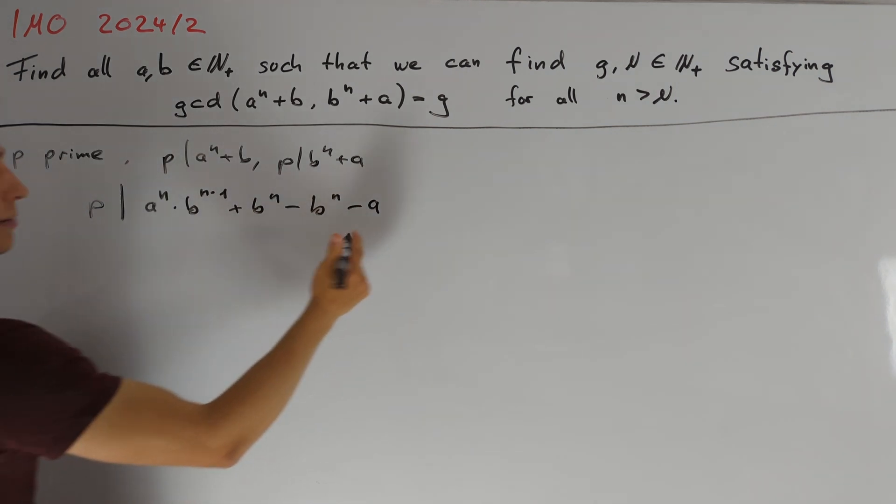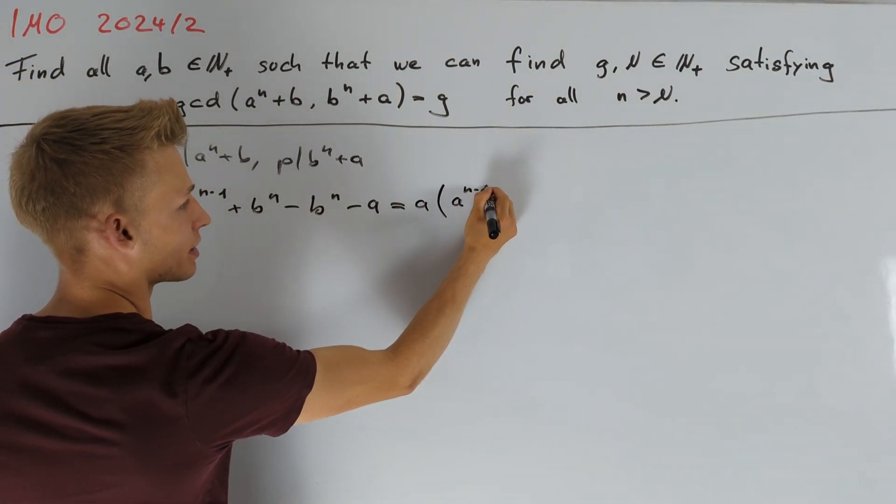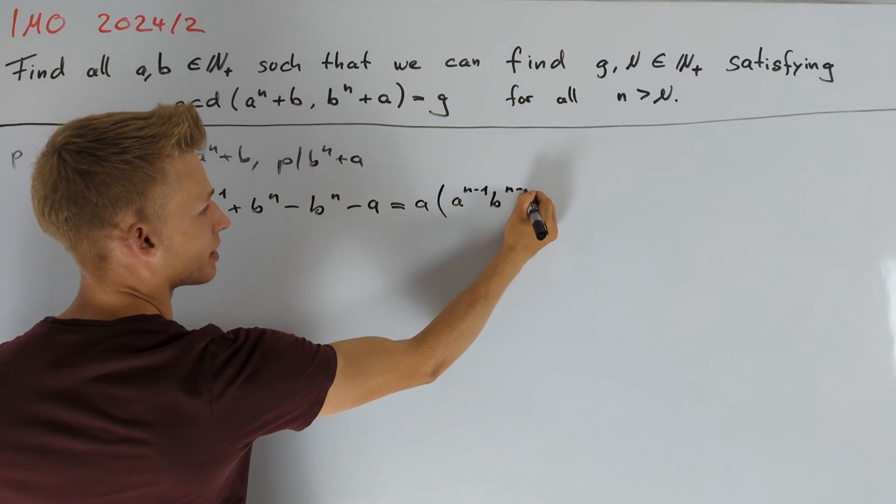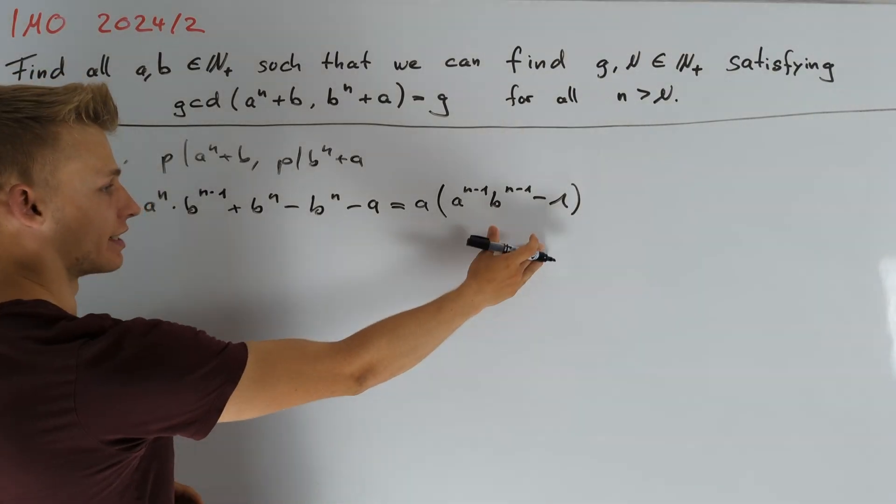And now this can be written as a times a to the power of n minus 1 b to the power of n minus 1 minus 1.